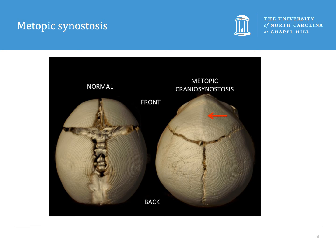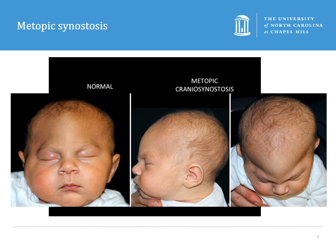Next, let's discuss metopic synostosis. This is the first single suture to close between three to nine months, however it can close very early and cause a triangular head shape — trigonencephaly, meaning triangle-shaped head. Patients will oftentimes have a pinched forehead and the intraocular distance may be quite small. A term you will hear frequently is the metopic ridge. It is oftentimes normal to have a small amount of ridging as the sutures close normally, however in metopic synostosis there is a very large ridge forming a triangular point, as you can see in the axial image on the right.